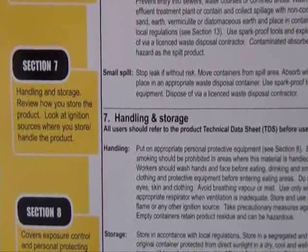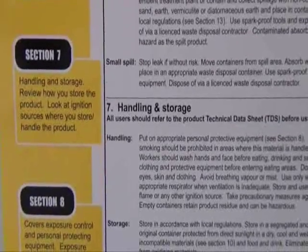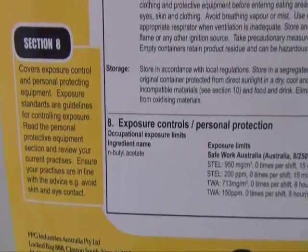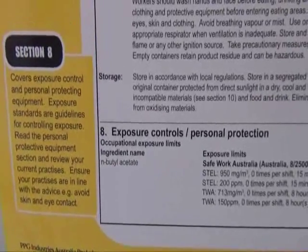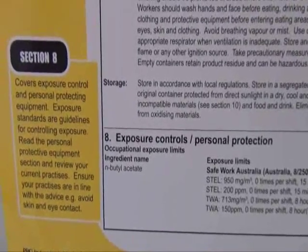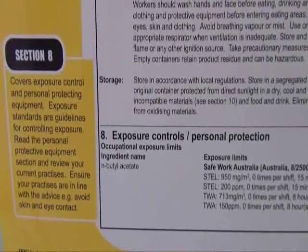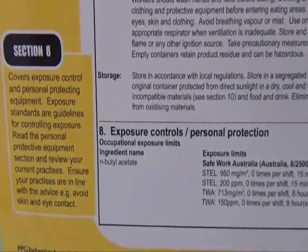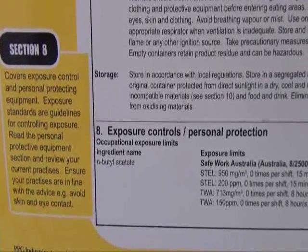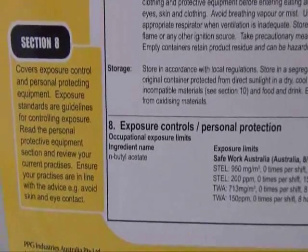Section 7 covers handling and storage. Review how you store the product and look at ignition sources where you store and handle it. Section 8 covers exposure control and personal protective equipment. Exposure standards are guidelines for controlling exposure. Read the personal protective equipment section and review your current practices. Ensure your practices are in line with the advice, and avoid skin and eye contact.